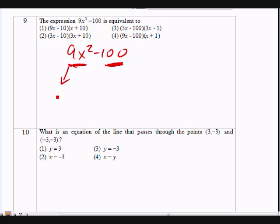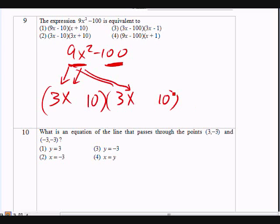So what is the square root of 9? That is 3. What's the square root of x squared? That's going to be x. What is the square root of 100? That's going to be 10 times 10, right? That gives you 100. And the sign that goes in between both of them is going to be a positive and a negative. Because when you multiply these two binomials together, you will get back 9x squared minus 100. And which choice is that? That is choice number two. That's the answer.